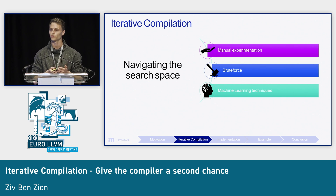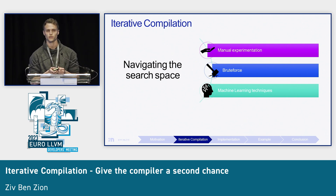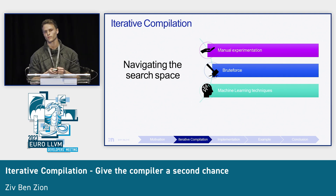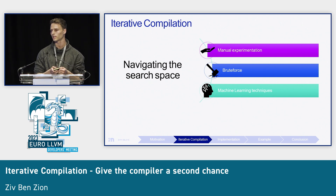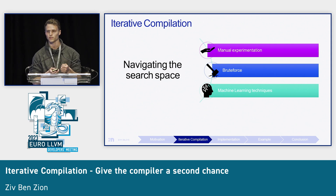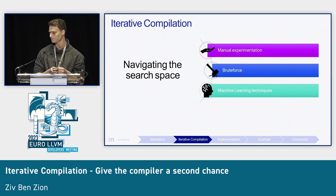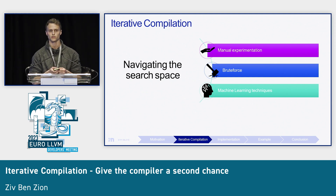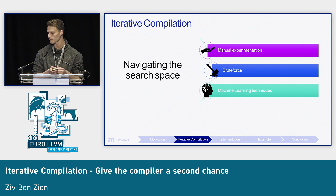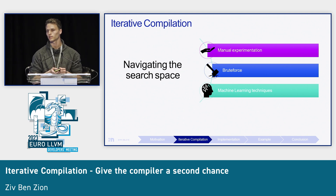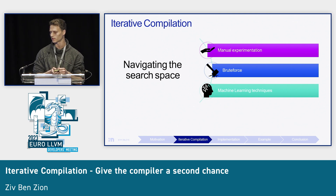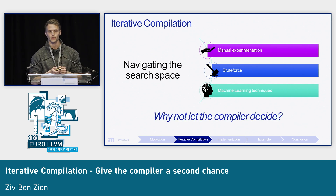Iterative compilation is the process of invoking the compiler multiple times using different sets of decisions or configurations, and then selecting the one which gave the best result. There are several methods to do so. There is manual experimentation, where a programmer can manually hint the compiler using pragmas or flags — but this is slow and requires great knowledge of compiler internals. Another way is to automate it using brute forcing, which will eventually lead to very long compilation time. We can also apply machine learning techniques, which helps reduce the number of tested configurations and there are already many existing tools that do this quite nicely. But my main point is that all these approaches don't utilize the knowledge the compiler already possesses.